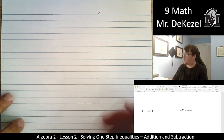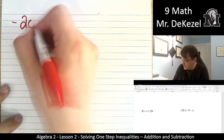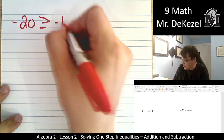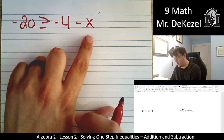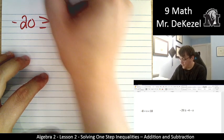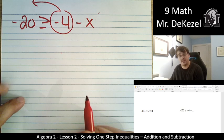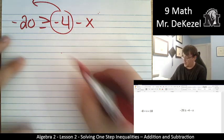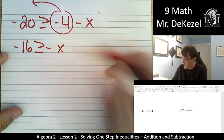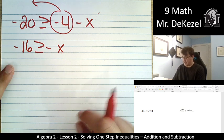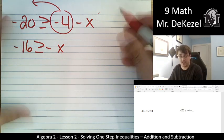Let's do a couple more. -20 ≥ -4 - x. We want to get the x all by itself, so we're going to move the -4 across the inequality sign. It becomes positive 4. So that's -16 ≥ -x. I don't like my negatives, so I can get rid of them just by changing all the signs.